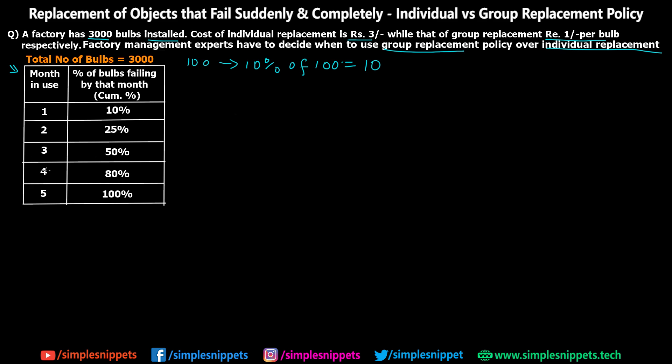After three months 50% are failing, after four months 80%, and after five months 100% of the bulbs are going to be failing for sure — which means all 3000 bulbs are going to be failing after the fifth month. This is something like a lifespan of the bulbs, and using this two-column table we have to figure out whether the group replacement policy would be worthwhile.